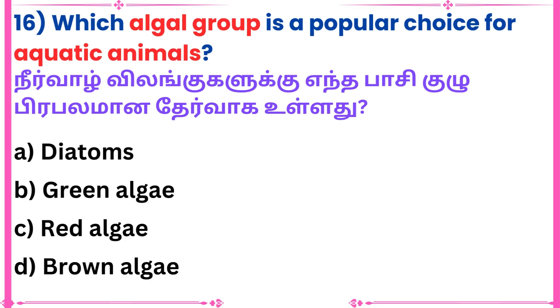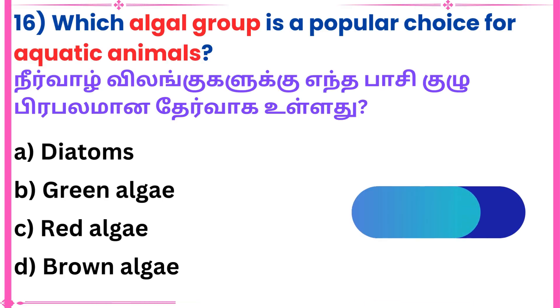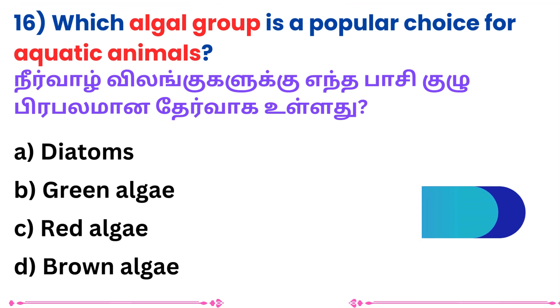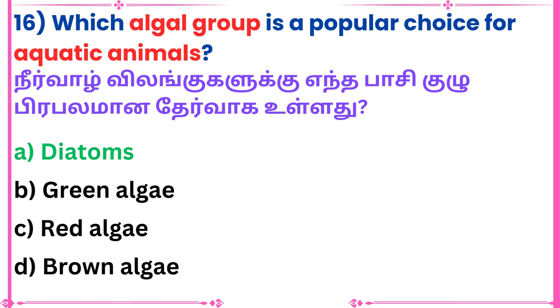16th question: Which algal group is a popular choice for aquatic animals? Answer: Diatoms.